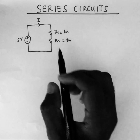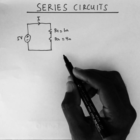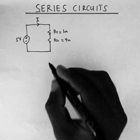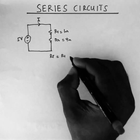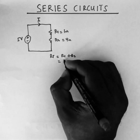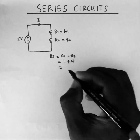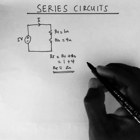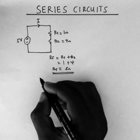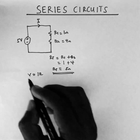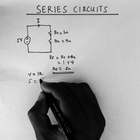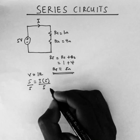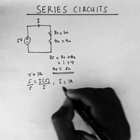In order to find the value of i flowing through the two resistors, we need to find the equivalent resistance of r1 and r2. Their equivalent is given by their sum: r1 plus r2, which is 1 ohm plus 4 ohms, giving us a total resistance of 5 ohms. Using Ohm's Law — v equals ir — with v equal to 5 and r equal to 5 ohms, we divide both sides by 5 and get i to be 1 ampere.